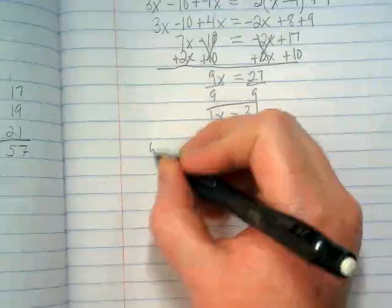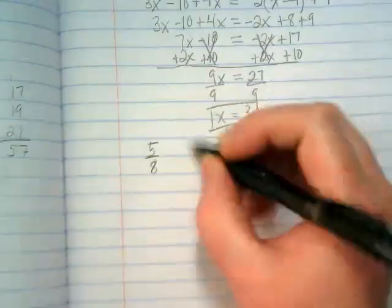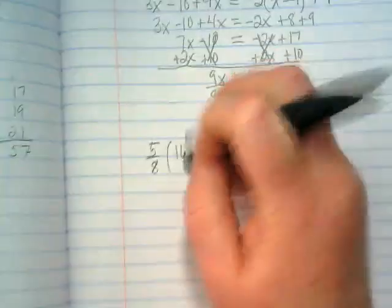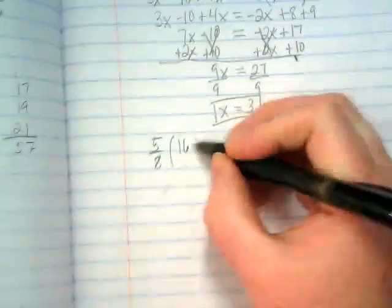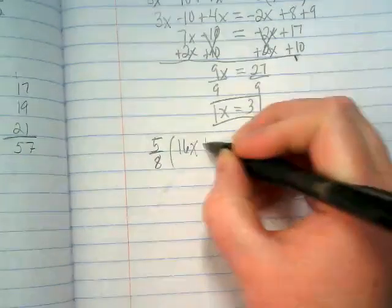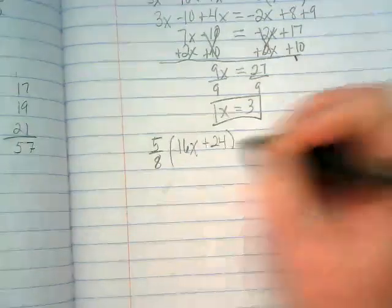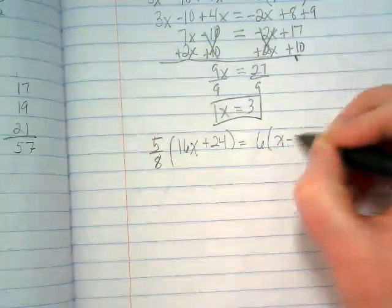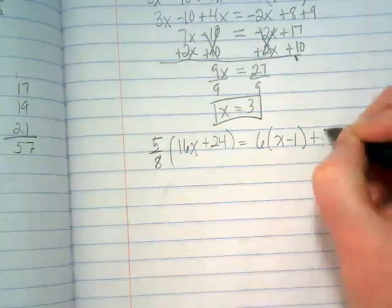Please write down 5 eighths times 16x plus 24. The book is using d. I don't like d. I'm going to use x.